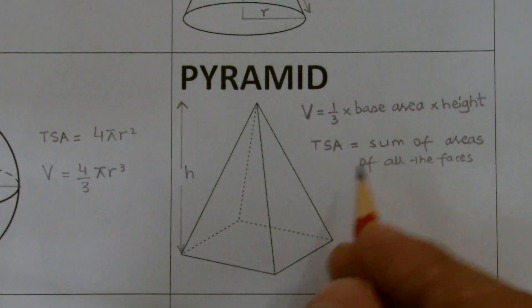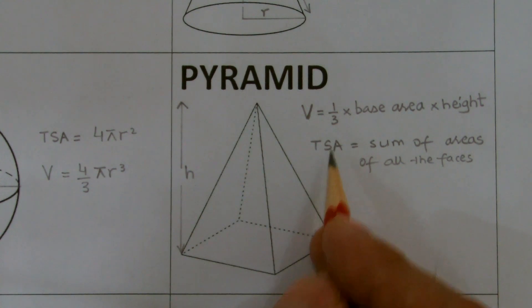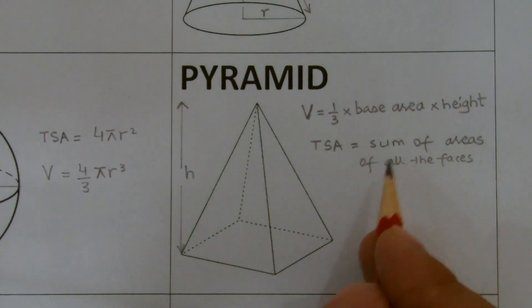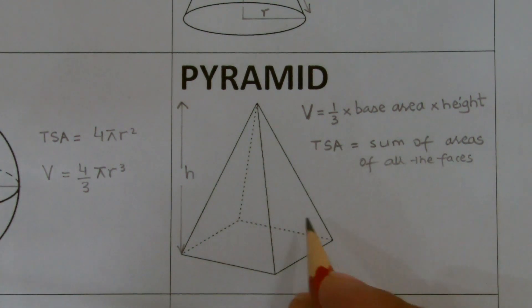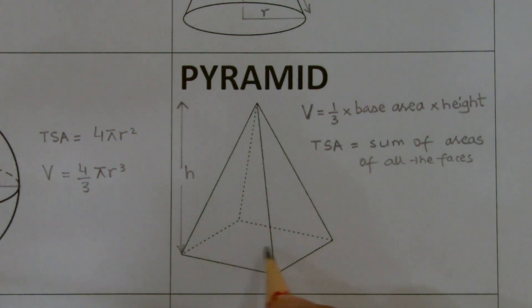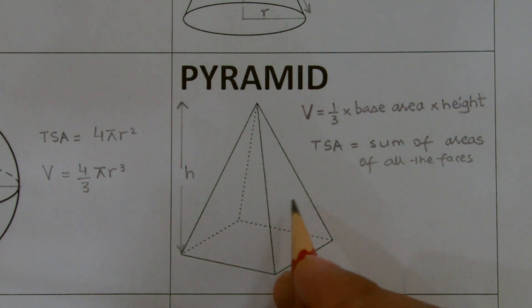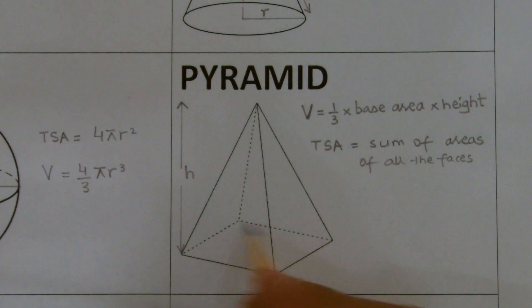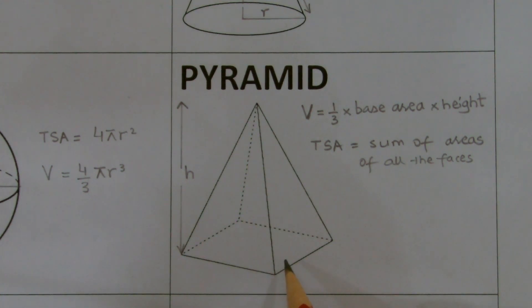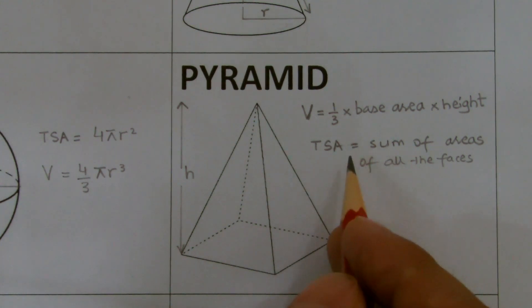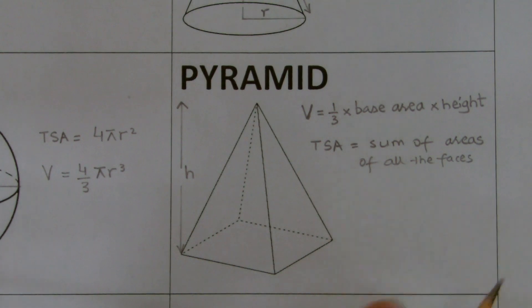To find the total surface area of a pyramid, sum up the areas of all the faces. A pyramid has a base plus a number of triangular sides depending on the type of base. At the moment, this pyramid has four triangular faces and one rectangular base, so I calculate the area of all five faces and sum them up to get the total surface area.